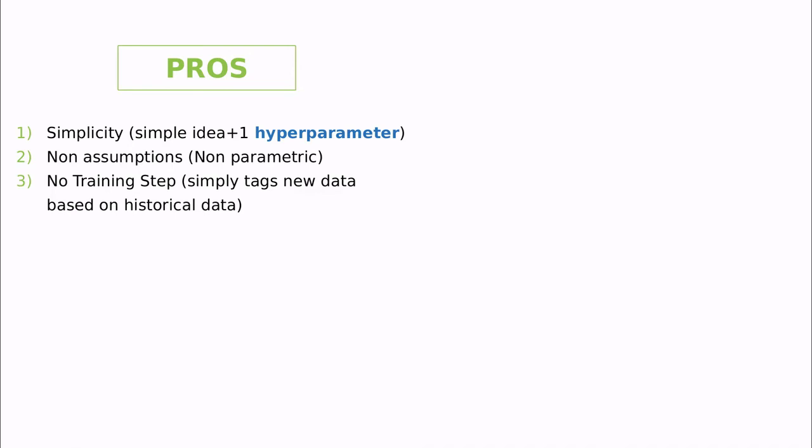The next thing that I love about KNN is that we don't have any training step. So you simply include new data, and you are tagging as yes, no, or blue, orange, or whatever. Okay, so this is very simple.